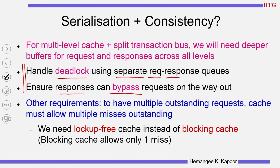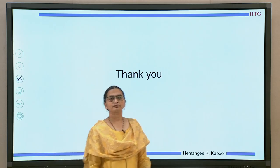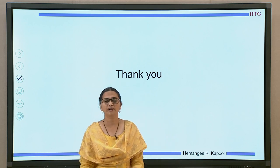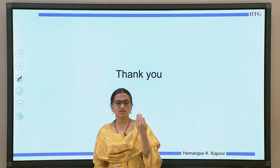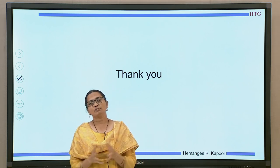With this we have finished the topic on multi-level caches with a split transaction bus. For a multi-level cache with a split transaction bus, we need deeper buffers at every level - buffers between L1 and L2, between L2 and the bus, with requests going up and down and responses in both directions. When multiple outstanding requests from the processor go to the cache, the cache should handle them, and if one request such as B is a cache miss among A, B, C, the cache must be a lockup-free (non-blocking) cache and not a blocking cache. The main problems to handle are good buffer management, good fetch deadlock management, and making sure that all write commits will eventually guarantee write completeness and atomicity. Thank you.